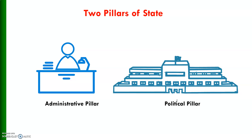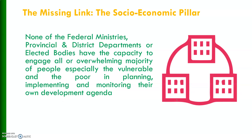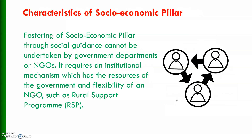The available literature points out that there are two pillars of the state: the administrative pillar and the political pillar. But there is a missing link — the socio-economic pillar is absent. None of the federal ministries, provincial and district departments or elected bodies have the capacity to engage the overwhelming majority of people, especially the vulnerable and the poor, in planning, implementing and monitoring their own development agenda. Fostering of the socio-economic pillar through social guidance cannot be undertaken by government departments or NGOs.